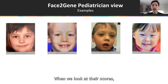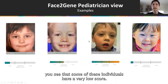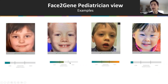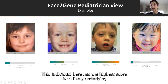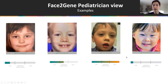When we look at their scores, you see that some of these individuals have a very low score. This patient here has an indeterminate range. This individual here has the highest score for a likely underlying genetic condition, and here's another individual with a low score.